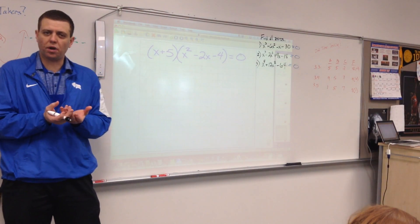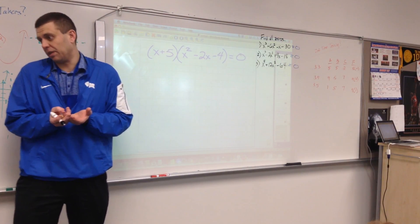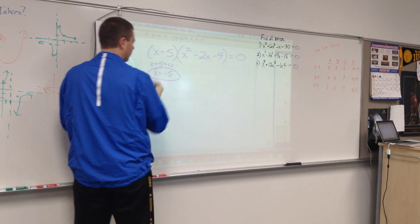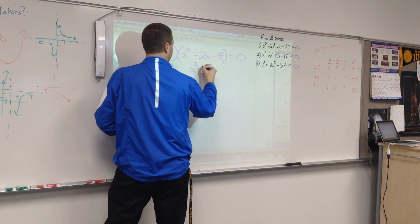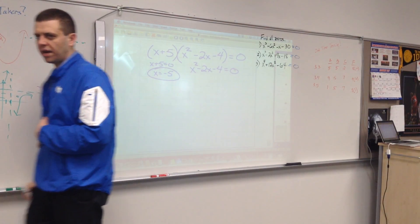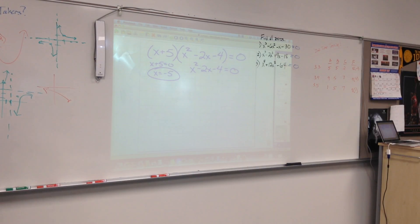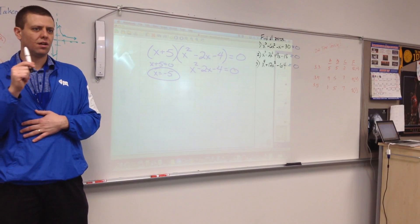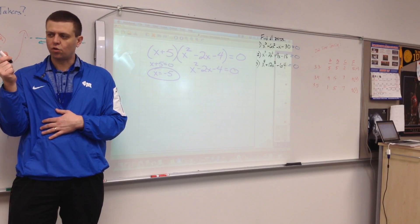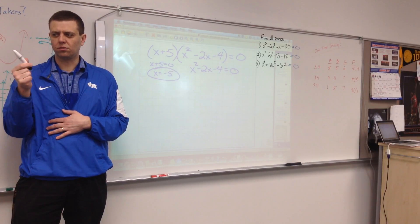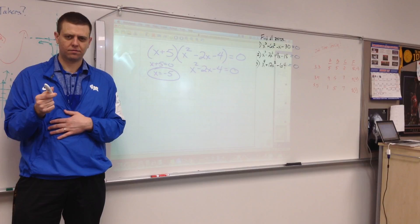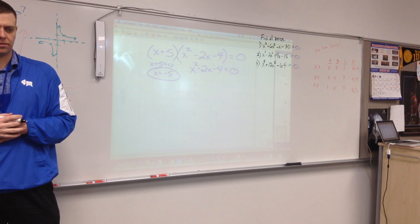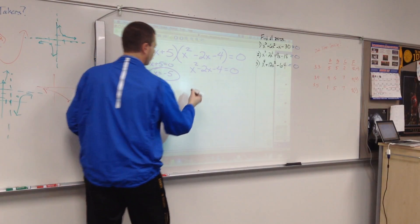I found one of the zeros on my graphing calculator. Because I found a zero, I knew one of the factors. To find my other factor I did synthetic division. Now, to find my zeros, what do I need to do with each factor? Set them equal to zero and solve. Obviously x plus five equals zero gives x equals negative five, which we already knew. How do you solve this quadratic equation? Completing the square or the quadratic formula.